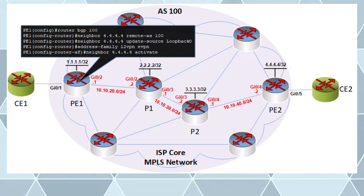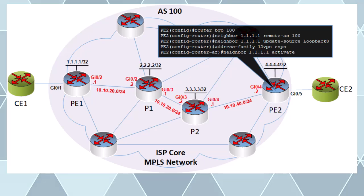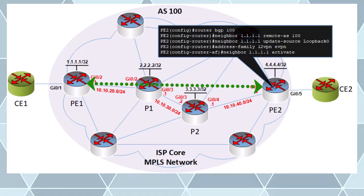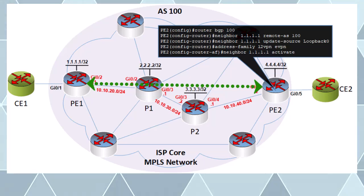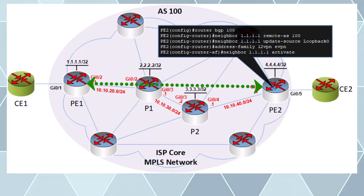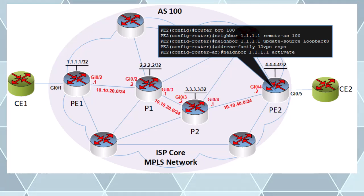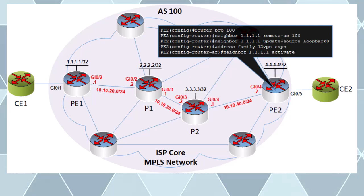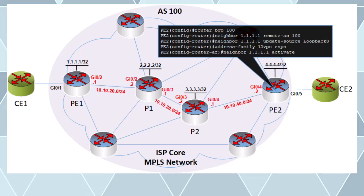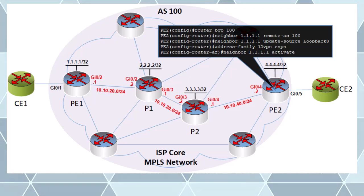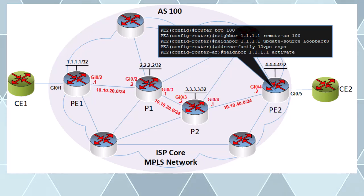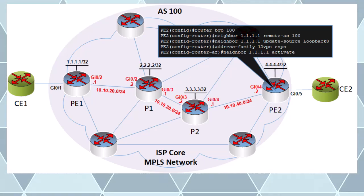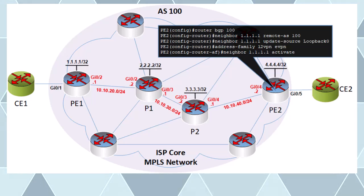Under the address family configuration for eVPN we activate the peering with PE2 to exchange Layer 2 addresses. We issue similar commands on PE2 to create the peering. PE1 and PE2 will exchange the MAC addresses they learn using BGP, and each local PE router will be able to find the destination remote PE router based on the desired destination MAC address. What we've configured until now is essentially the core of the eVPN configuration; the rest has to do with configuring the device to accept frames at Layer 2.